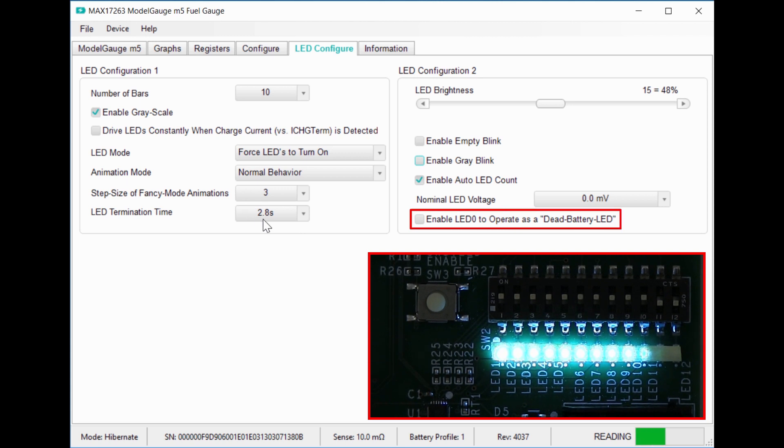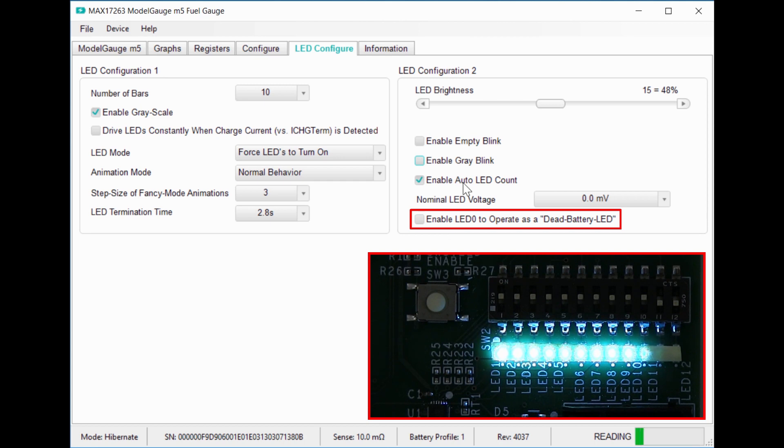The last feature here is the empty LED. This is typically a different color and lights up when the indicator reaches 0 bars.